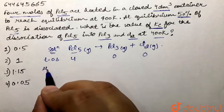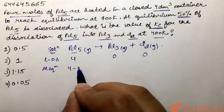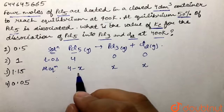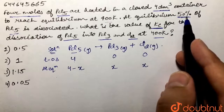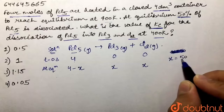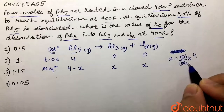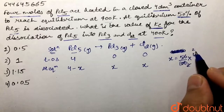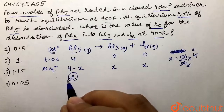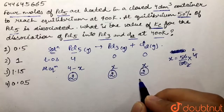At equilibrium, some moles would get subtracted from PCl5 and would be formed as PCl3 and chlorine. We are given that X is 50% dissociation, so X equals 50% of 4 moles, which gives X = 2. Therefore, 4 minus 2 equals 2 moles of PCl5 at equilibrium, and we have 2 moles each of PCl3 and chlorine.